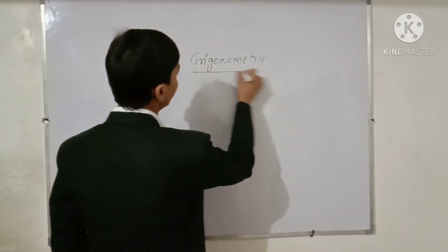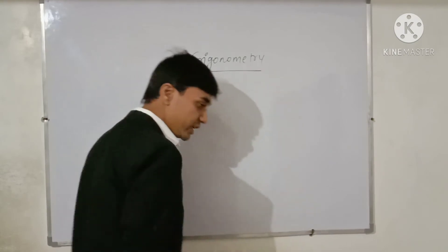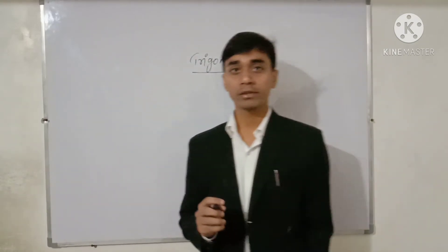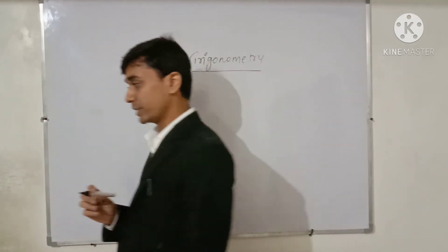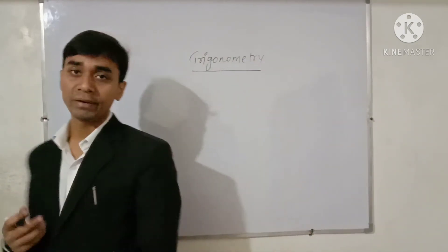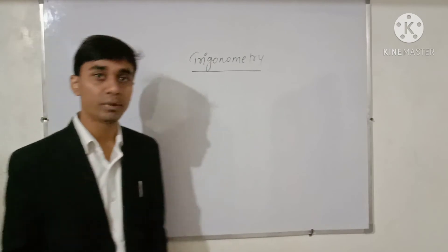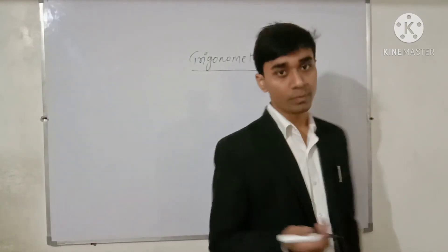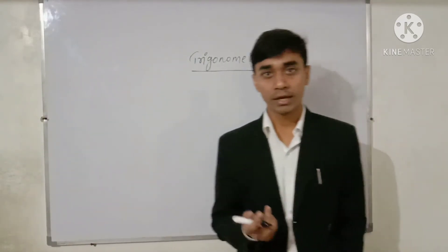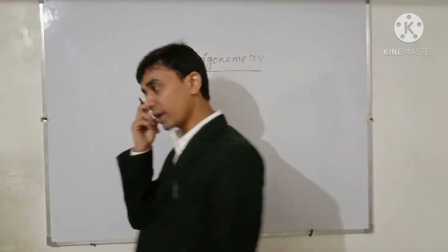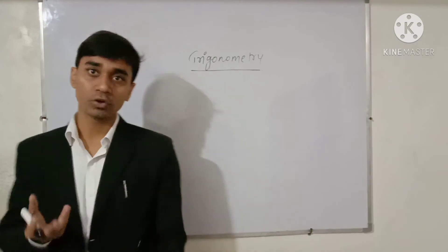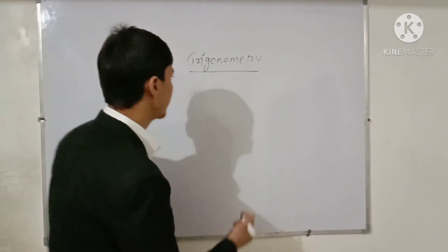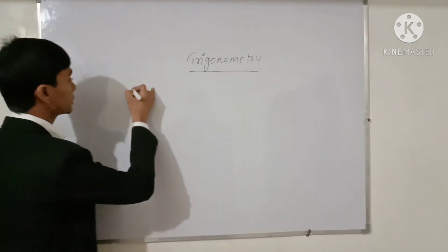So we have now learned what Trigonometry is, its applications, and what the Trigonometric ratios are. Trigonometric ratios are nothing but the ratios of the sides of a right-angle triangle — that is why they are called Trigonometric ratios. Now let us take a question.